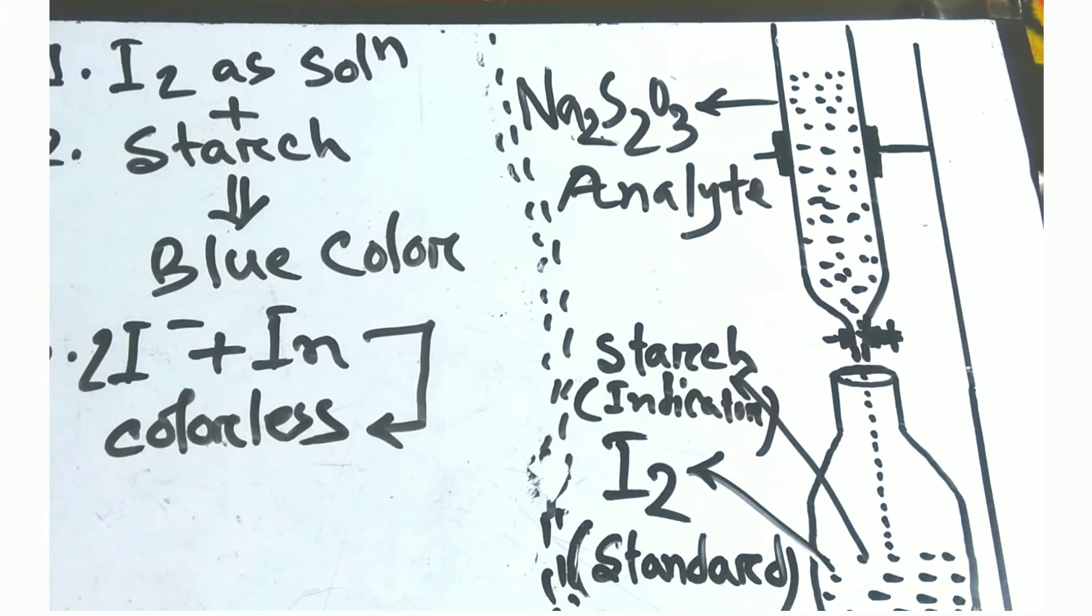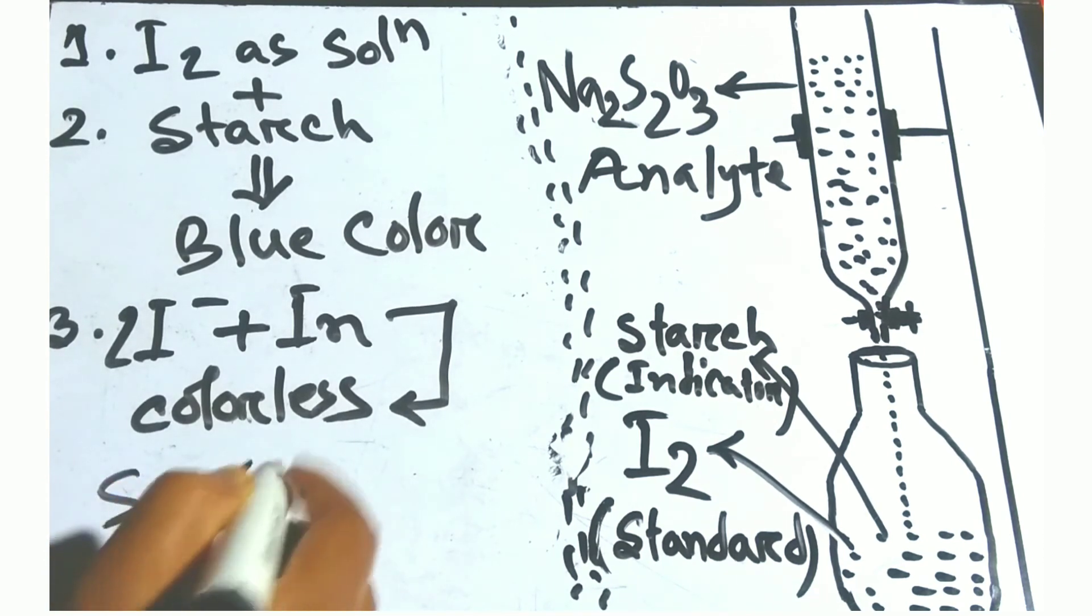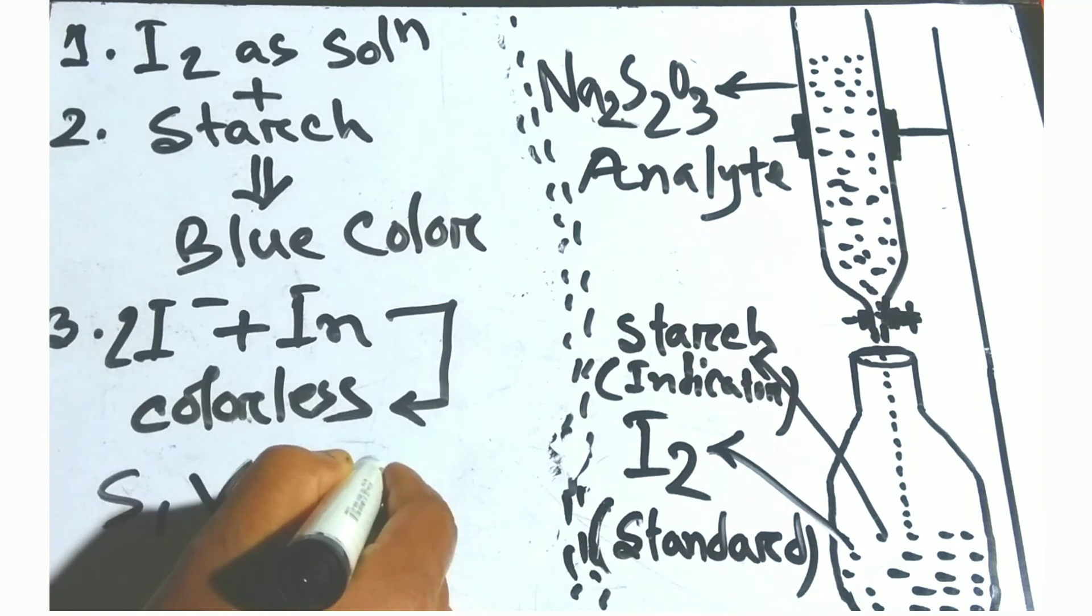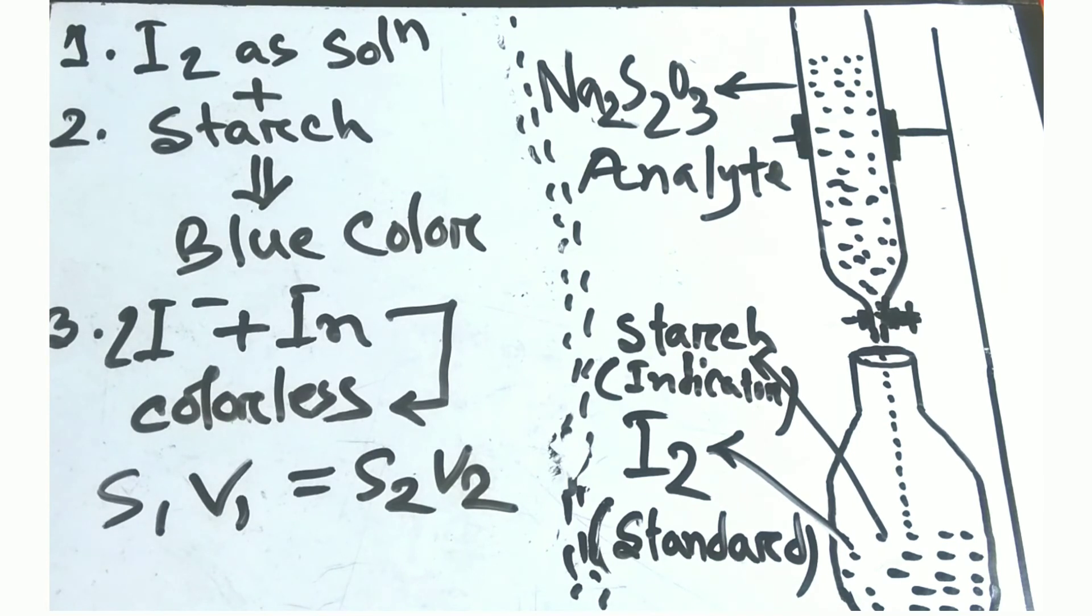When we get the equivalence point, we get the volume of sodium thiosulfate. You must remember that iodine is the standard solution. When we get the volume of sodium thiosulfate, we will use the formula S1V1 equals S2V2, and you will find the concentration of sodium thiosulfate.